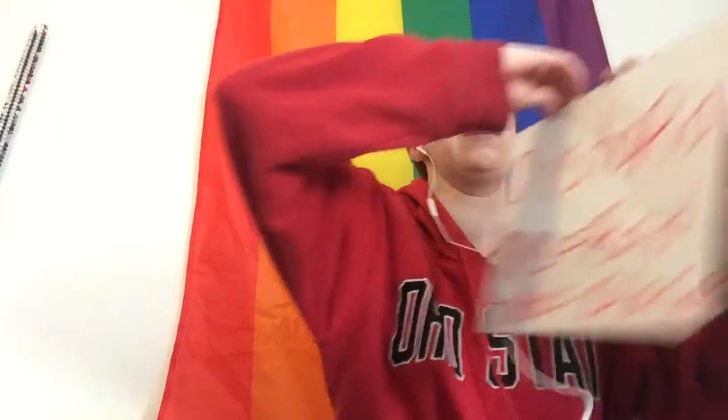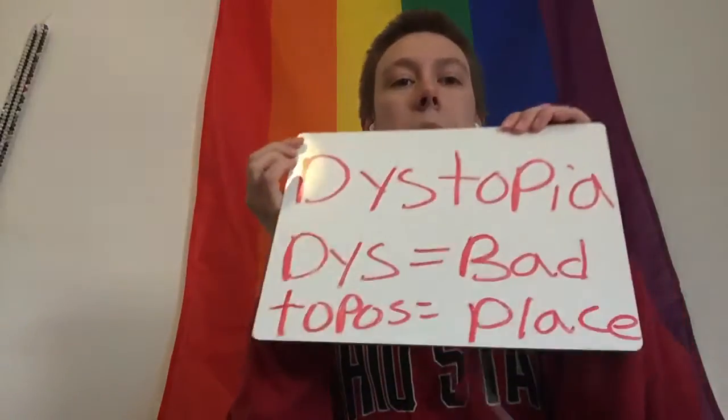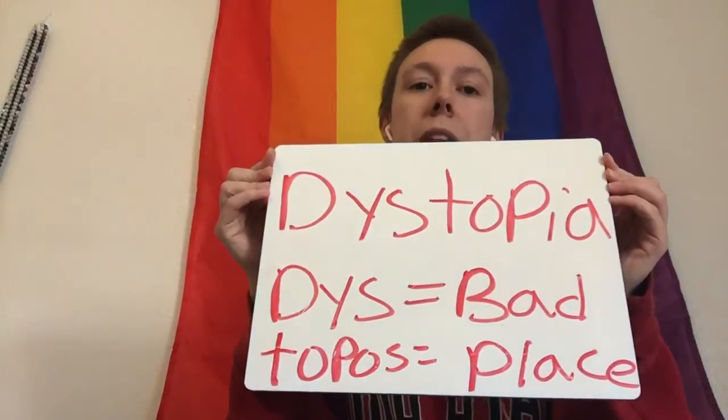In a utopia, everyone has what they need to succeed, everyone can prosper and have a good life. Then we have 1984, which we know is not a utopia — it is a dystopia, a dystopian novel. Dystopia comes from 'dys,' meaning bad, and 'topos,' meaning place, so it translates to 'a bad place.' Oftentimes with dystopias, the aim was to create a utopia, but it fails and the world ends up messed up.